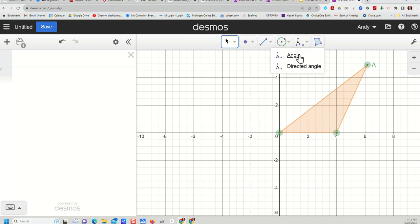So if I choose angle, I'll click on a first point, a second point, and a third point. And now I have an angle created here at my vertex. And that angle changes in real time.